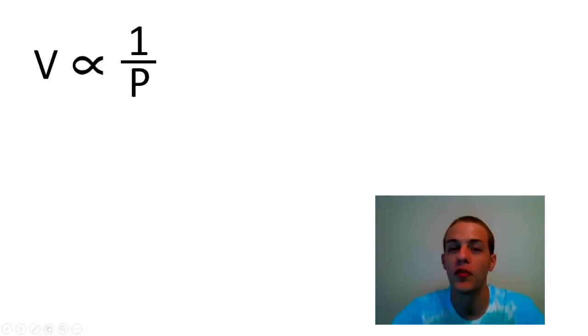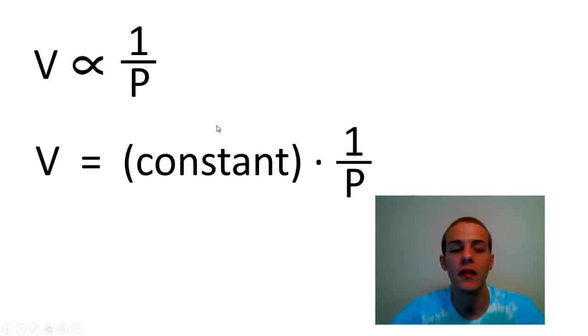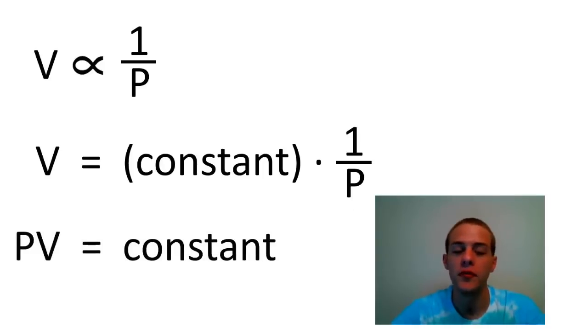Now, chemists don't normally like proportionalities. They'd rather turn them into an equation. But luckily, we can turn this proportionality into an equation very simply by saying that the volume is equal to 1 over the pressure times a constant. And then finally, if we multiply both sides of this equation here by the pressure, we will get that the product of the pressure and volume is equal to a constant. So that means that the pressure times the volume is always going to be equal to some constant. So as you increase the pressure, you're decreasing the volume, but the product of those two terms is always going to be the same number.